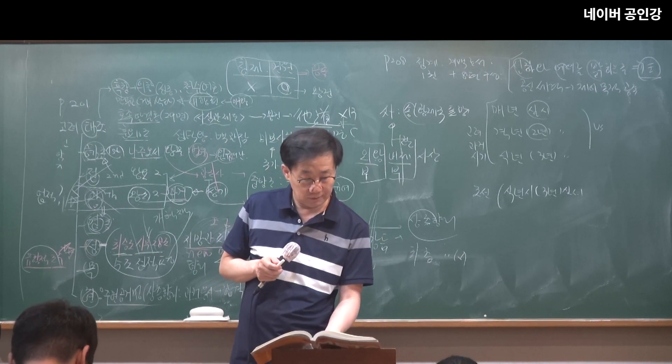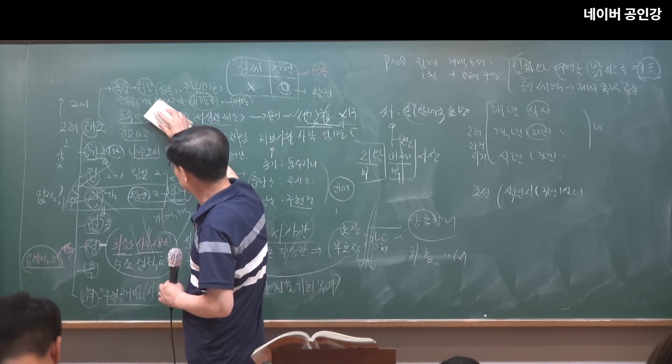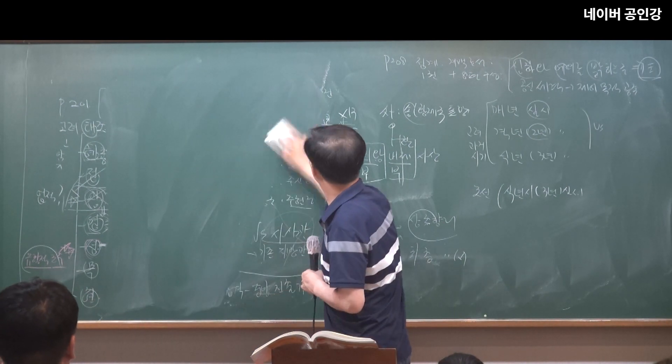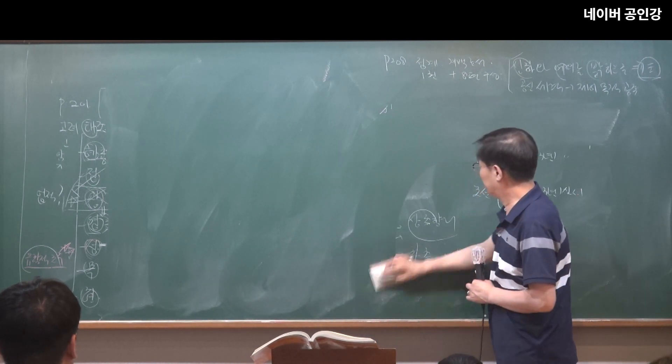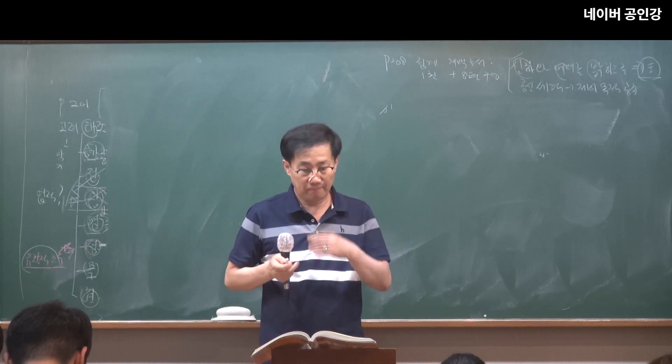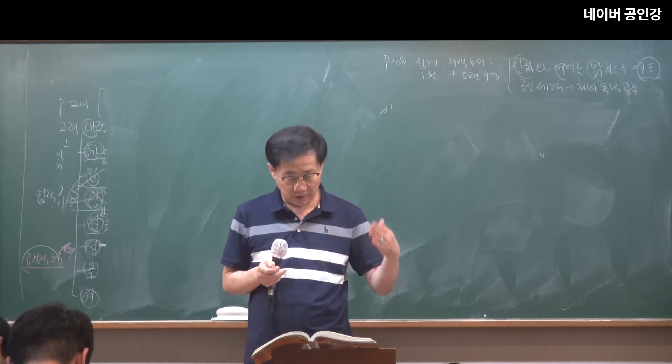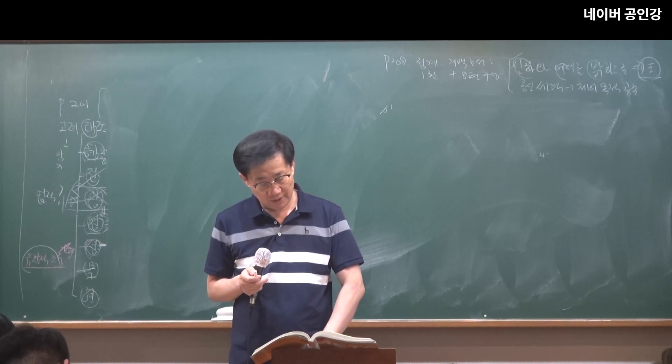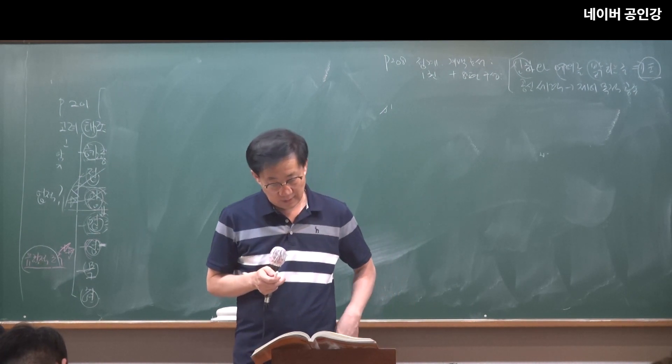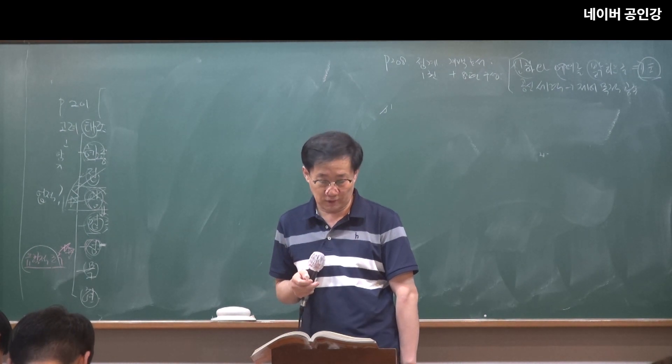목종부터 가도록 하겠습니다. 첫 번째, 개정전식과. 전현직과 인품을 폐지했대요. 인품 폐지. 인품을 폐지하고 간품만 적용하고, 군인전과 향리에도 한액과를 지급하게 되었다. 나중에 전식과 제도할 때 다 정리할 거니까 이건 그대로만 넘어가세요.